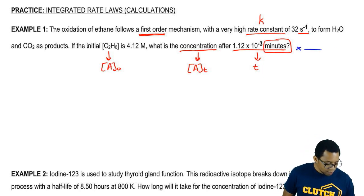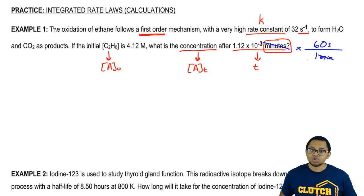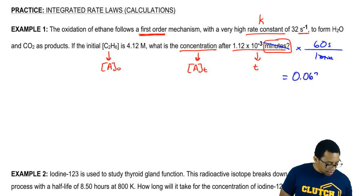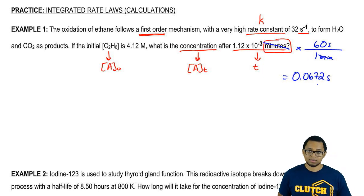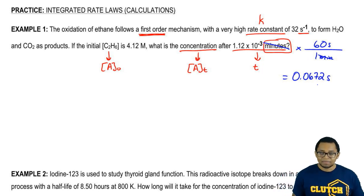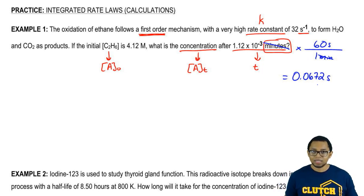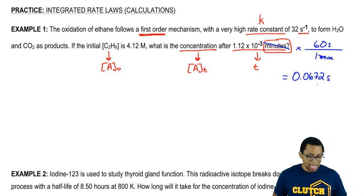For every one minute that we have, we have 60 seconds. Minutes cancel out, so I have that number times 60 which gives me 0.0672 seconds. Now, my time T and my rate constant K are both in the same units of time.